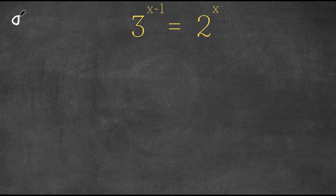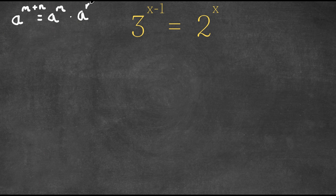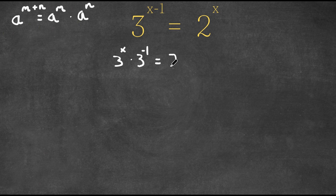If we have something in the form a to the power of m plus n, this can actually be written as a to the power of m times a to the power of n. So as you can see here, we have 3 to the power of x minus 1, which can be written as 3 to the power of x times 3 to the power of negative 1. And this is equal to 2 to the power of x.